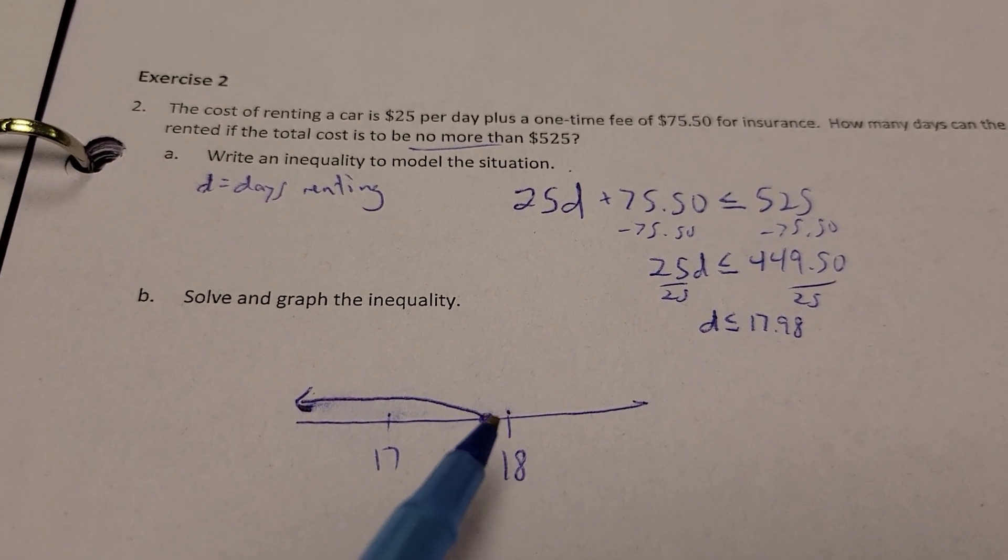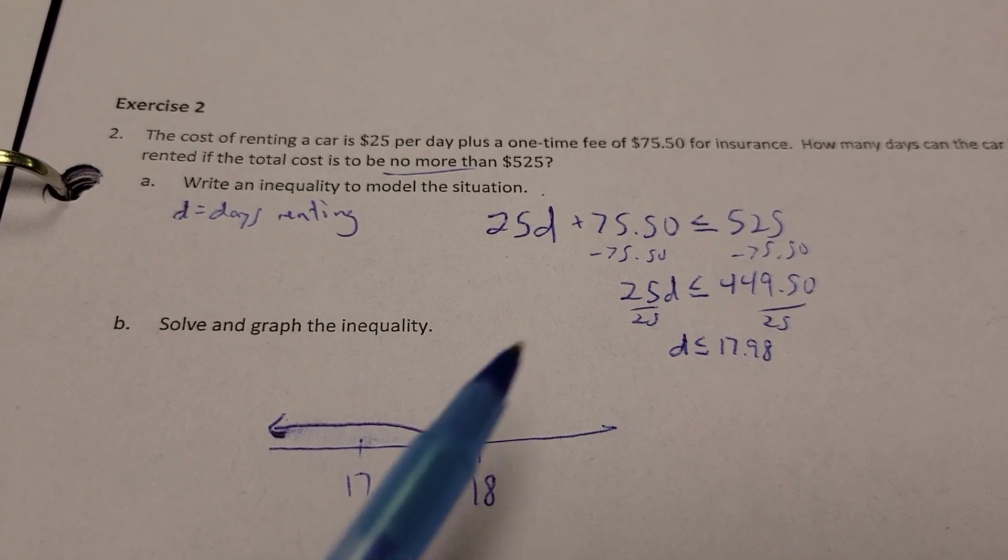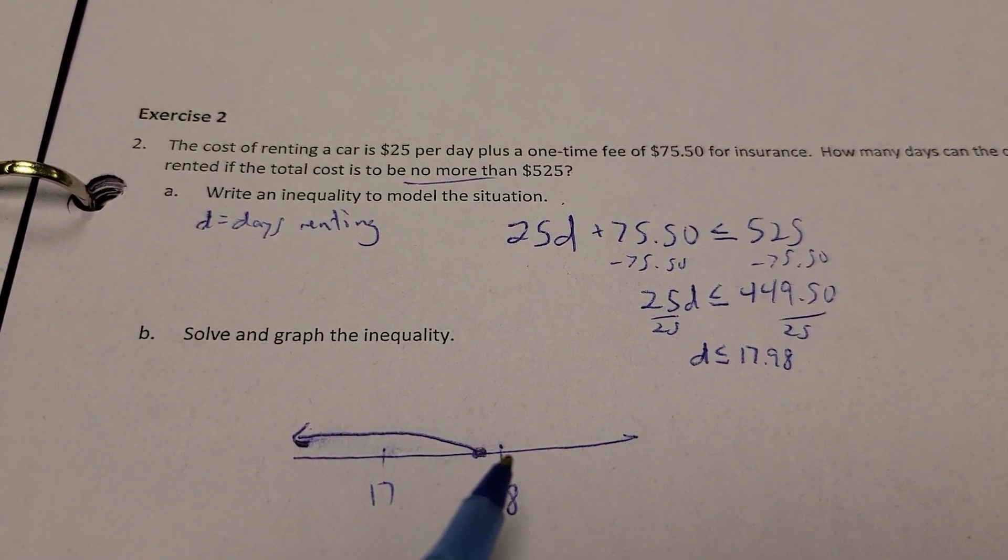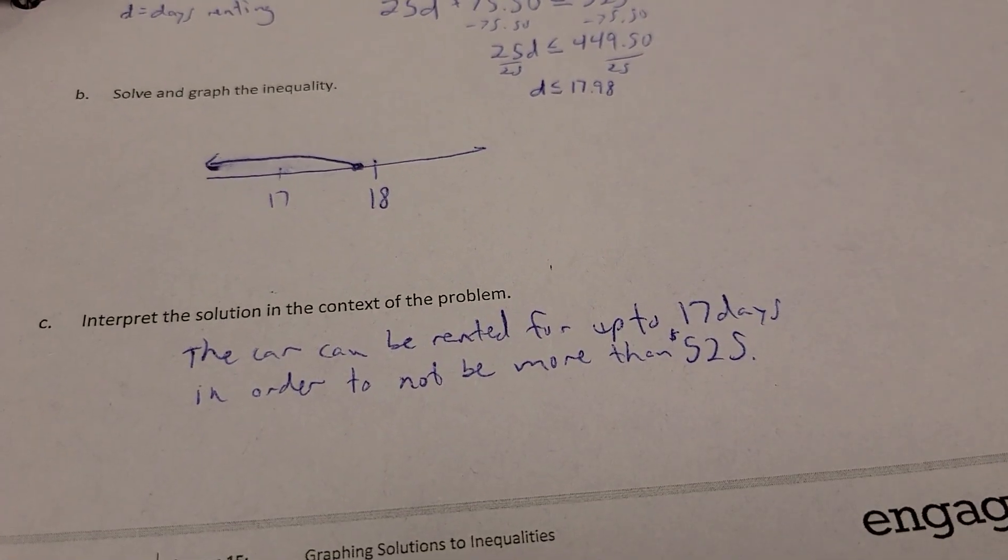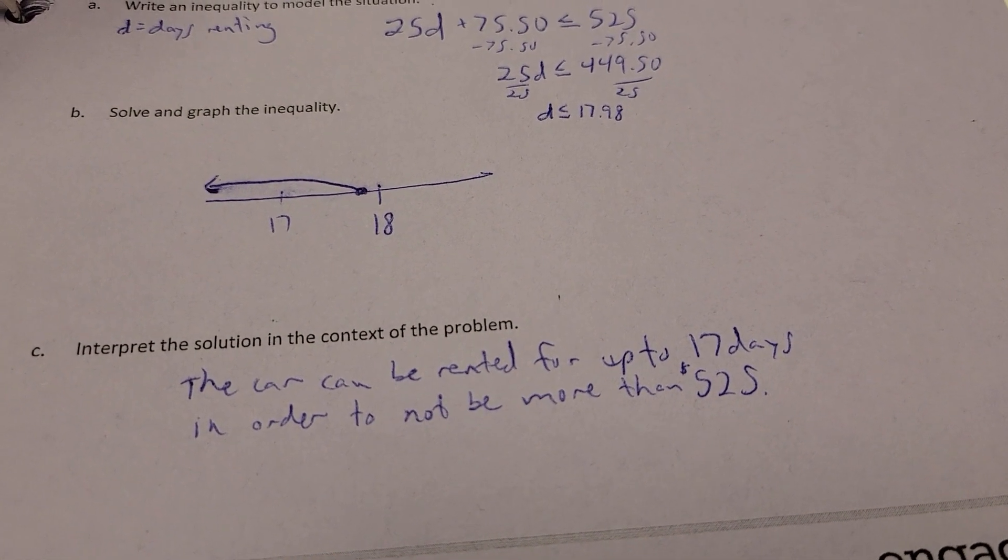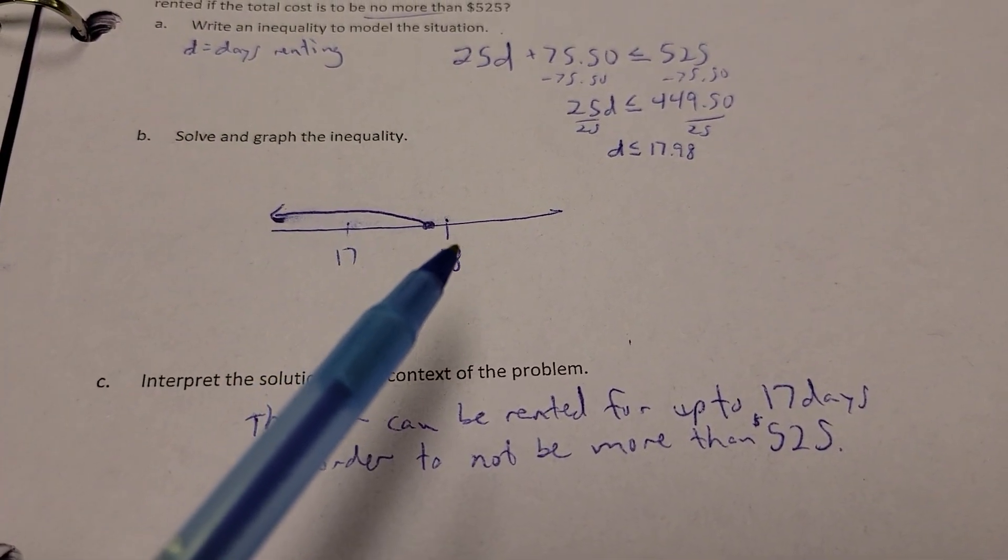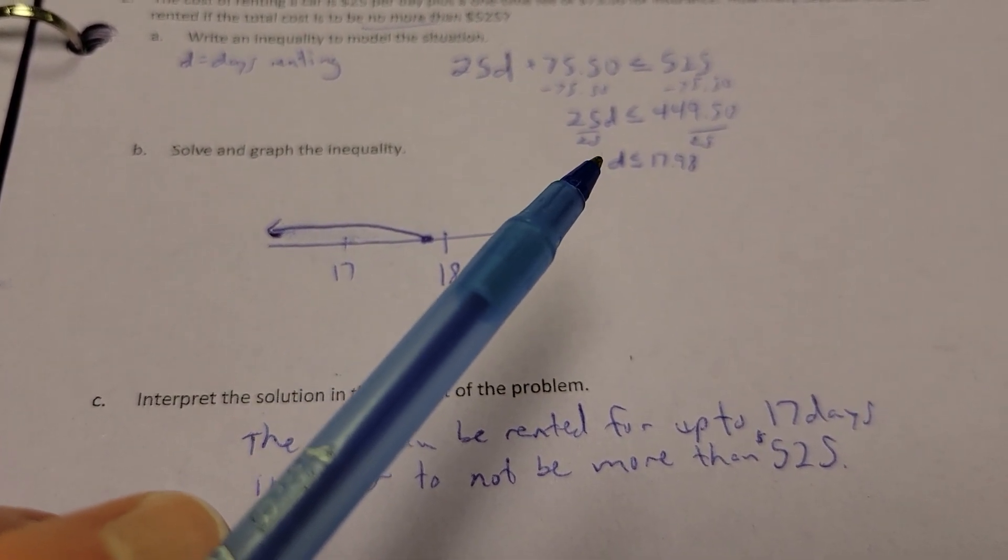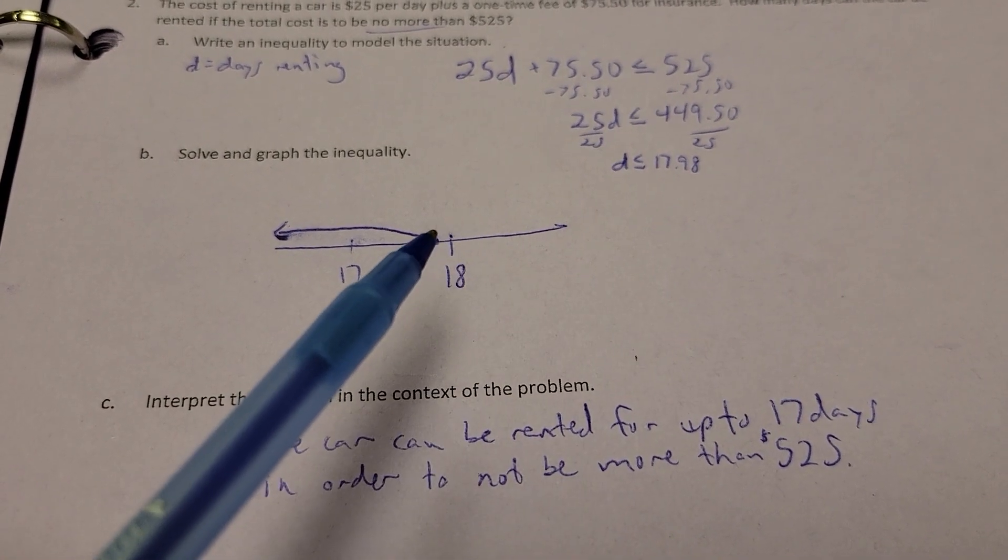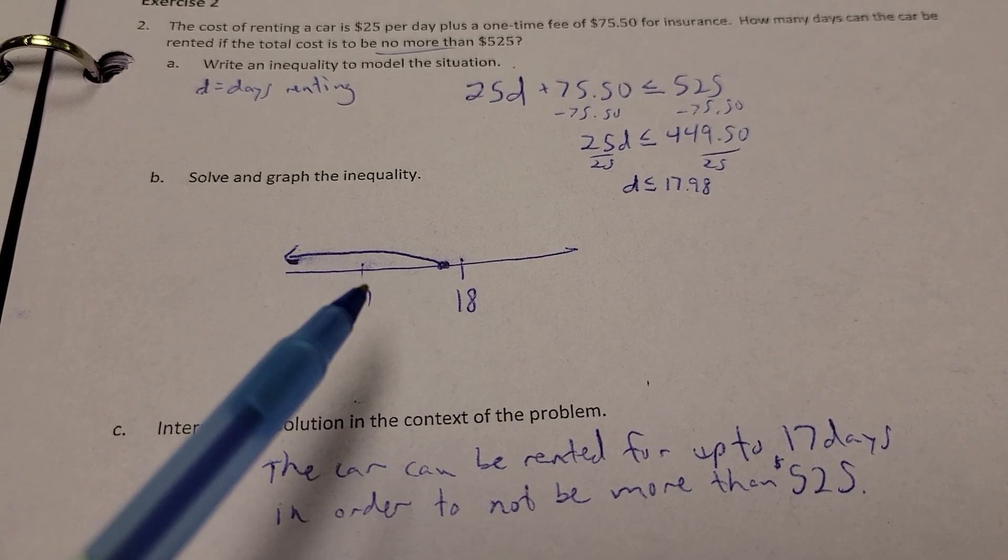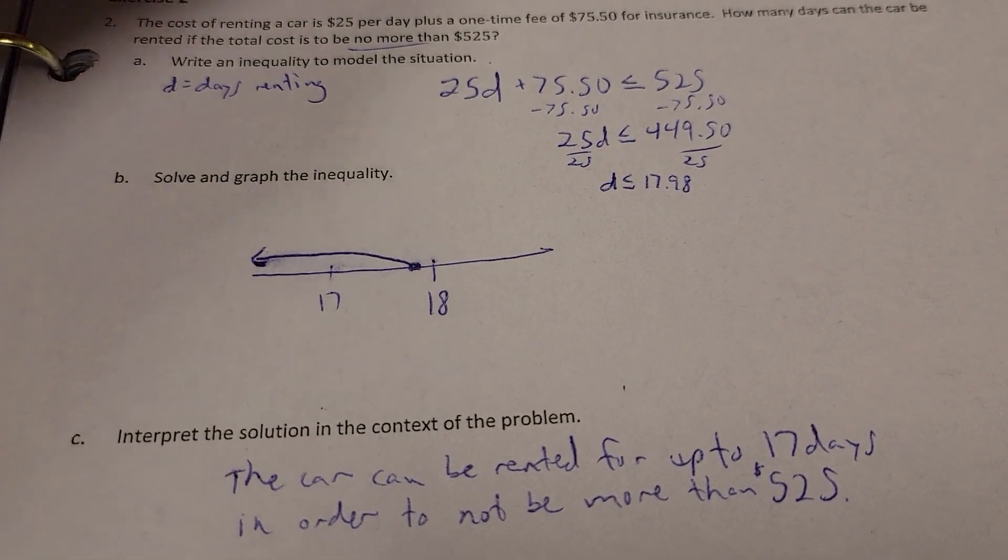So, if I graph it, it's a darkened in bubble because it had the equal to part of it, and anything less than that. So, I can't use an 18. It's got to be 17. So, the car can be rented for up to 17 days in order to be not more than $525. Notice how the line never made it to the 18, so I can't use it. It has to be less than or equal to $17.98. Well, I can't rent 0.98 of a day's worth of car, so I have to go back to this day. So, that's the max days I can use.